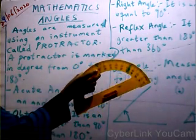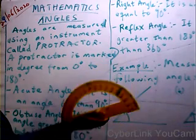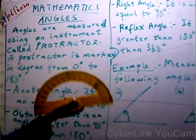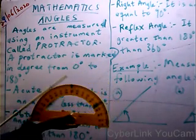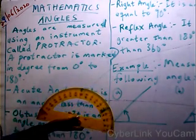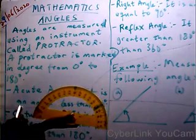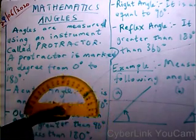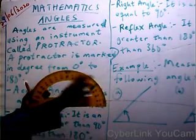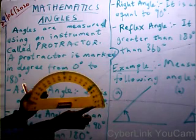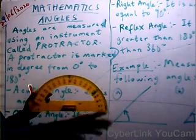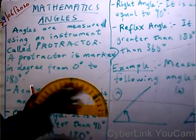This is the protractor, and this protractor is marked in degrees from 0 to 180 degrees. If you check your mathematical set and open it, you can see the protractor. It is marked from 0 to 180 — either from here on this side or from here to the other side.